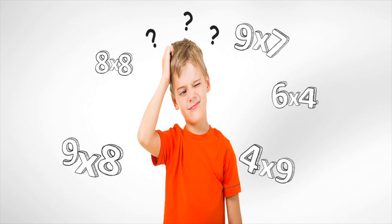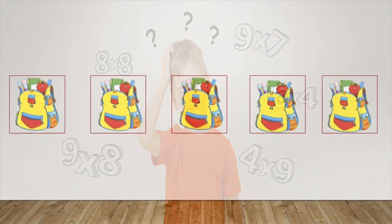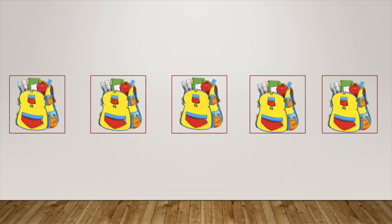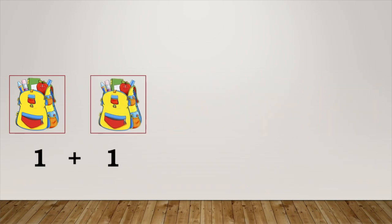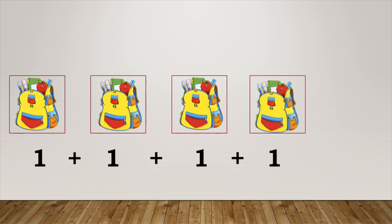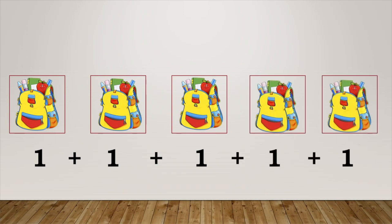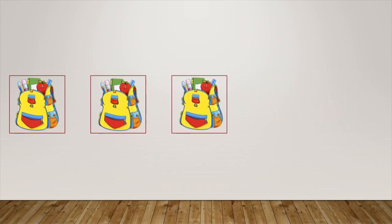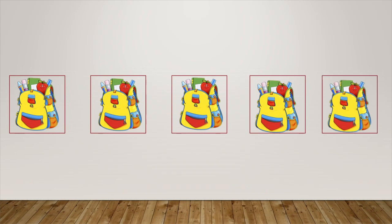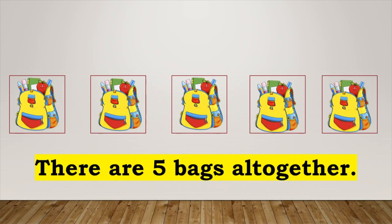Let us understand it with the help of an example. We have five sets of bags with one bag in each set: 1 plus 1 plus 1 plus 1 plus 1. Let us add them together: 1, 2, 3, 4, 5. There are five bags altogether.